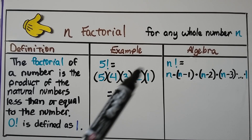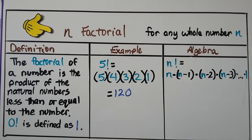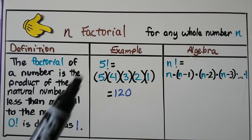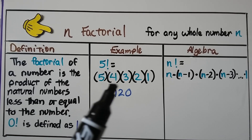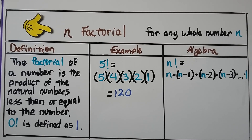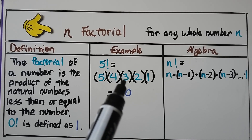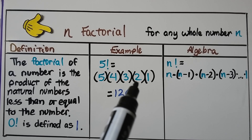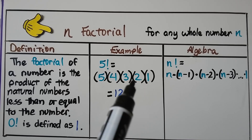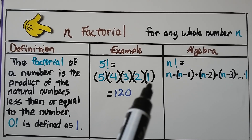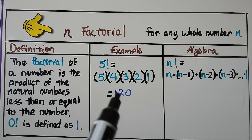For your notes about n factorial — that would be for any whole number n — here is the definition: the factorial of a number is the product of the natural numbers less than or equal to the number. And zero factorial is defined as one. For example, five factorial would be five times four times three times two times one, which equals 120. Five times four is 20, times three is 60, times two is 120. By the time you get to the one, you know what the answer is, because multiplying anything by one — by the identity property — keeps it that number.